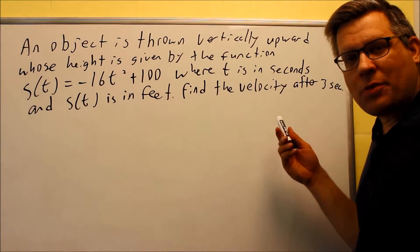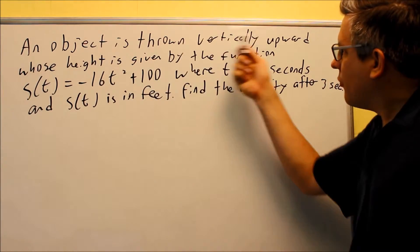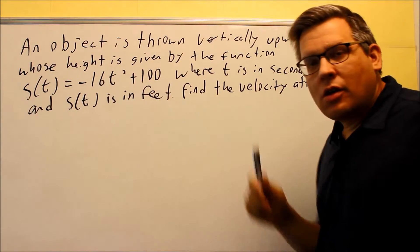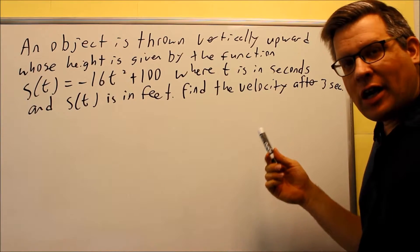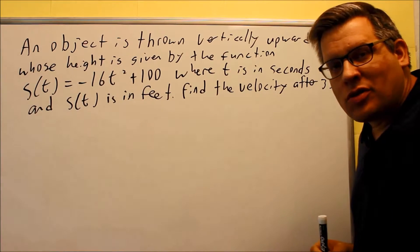This one, an object is thrown vertically upward whose height is given by this function. So we're given a position function. They're asking us to find the velocity at 3 seconds.